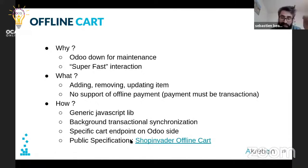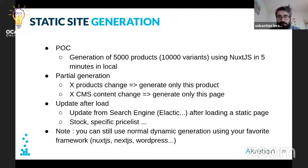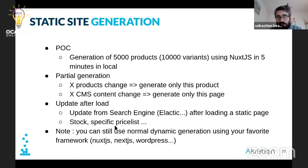For static site generation, we've done a prototype. We tried generating a website with 5,000 products and 10,000 variants — generating a full website with categories took just 5 minutes locally. So it's not really long to generate a website with 10,000 variants. It's a normal-sized website. We are going to work on improving this further — I think we can improve performance a lot, but 5 minutes is already quite acceptable.